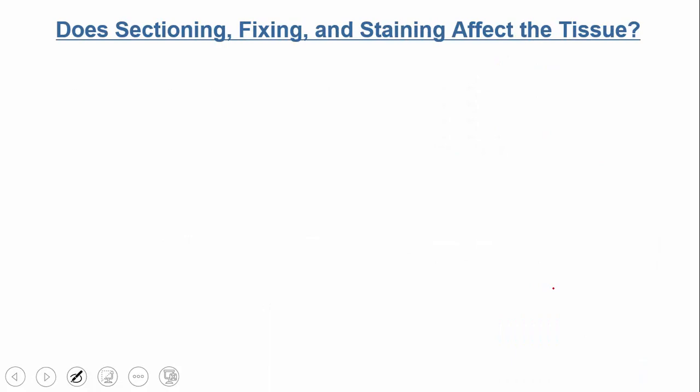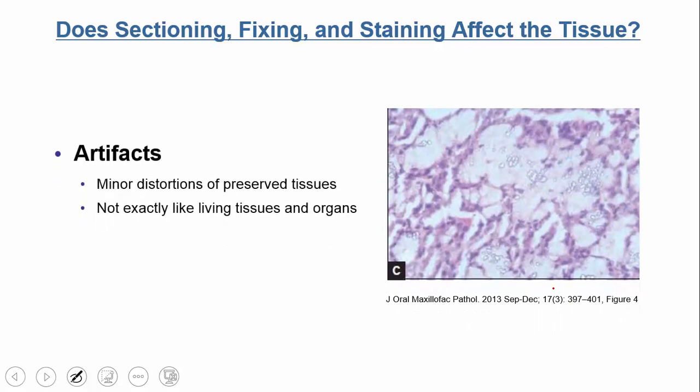Something to consider: when you're fixing, killing, sectioning, staining, and mounting — does it affect the way the tissue looks? The answer is yes. Often we'll have things called artifacts that occur. An artifact is a distortion — the tissue doesn't look exactly how it should because of the technique used. We never want artifacts, but it's a necessary evil. The better you get at a given staining and imaging technique, the more you can reduce artifacts, but to some degree they'll always be present.